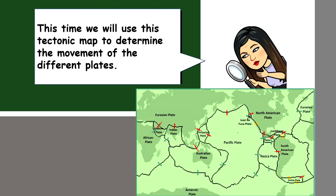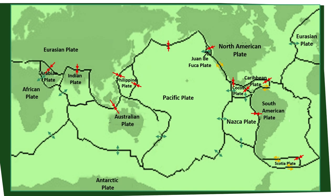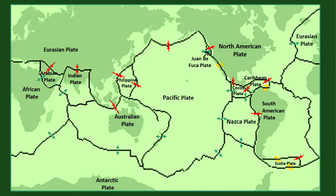This time, we will use this tectonic map to determine the movement of the different plates. Using the tectonic map, you will name the different major plates, the different minor plates, and describe the movement of plates using the arrows indicated in the map. Use the following symbols to indicate the plate movement.